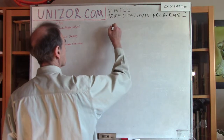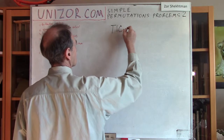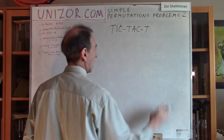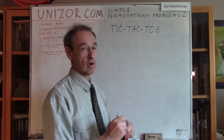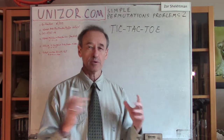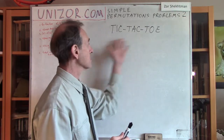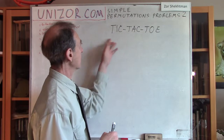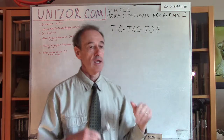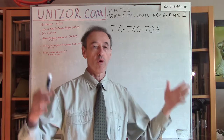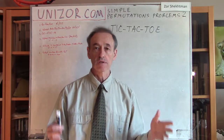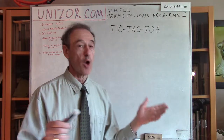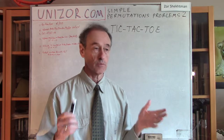Problem number one. We have a certain number of letters. In this case, I have chosen the name of the game Tic-Tac-Toe as a collection of letters from which we would like to make new words. When I say words, I don't really mean English words — just any sequence of characters using all the characters from this word. So we have letters T-I-C-T-A-C-T-O-E, and all these letters must be used in different combinations to form new nine-character words. The question is: how many different nine-character words can I construct?